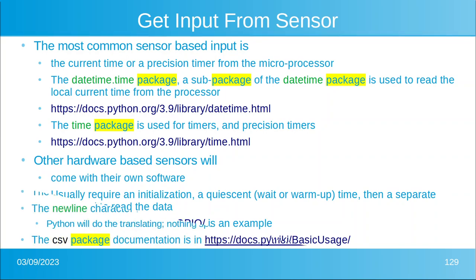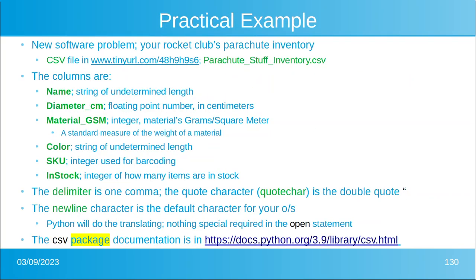Now let's look at a practical example — your Rocket Club's parachute inventory. You can find the inventory file in the shared folder; there's a link there. The columns are: name (the name of our parachute), diameter (a floating point number), the material in GSM — that's a standard for textiles, grams per square meter, which measures how much the material weighs — the color, the SKU, and how many of these we have in stock.